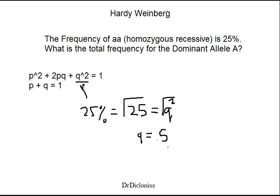If Q equals 0.5, then we can plug into the equation Q plus P equals 1. So P plus 0.5 equals 1. Therefore, P is equal to 0.5, or 50%.